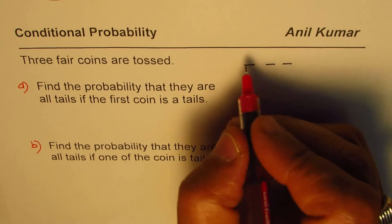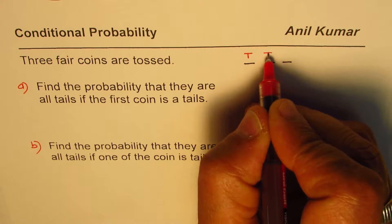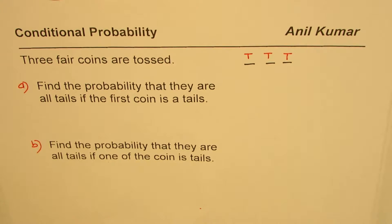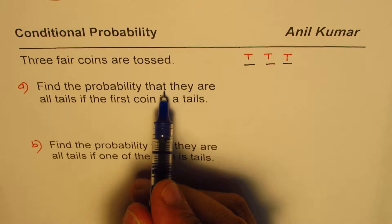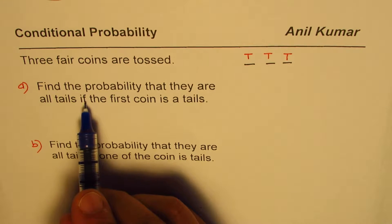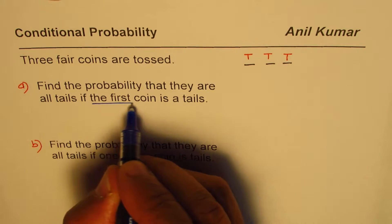So we want to find the probability that they are all tails. Three are tossed and here we are given a condition: find the probability that they are all tails if the first coin is a tail.